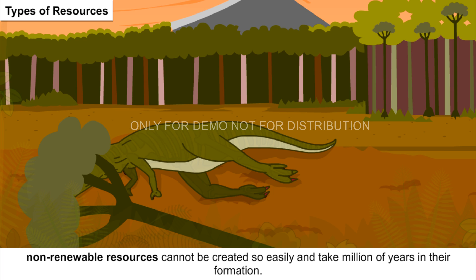On the basis of ownership, individual resources, community-owned resources, national resources, and international resources come under this category. Individual resources are owned by an individual in the form of lands, plots, and houses. Plantation and water in wells and ponds are also examples of these resources.